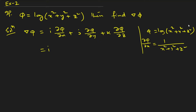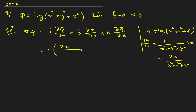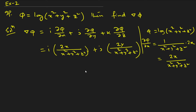By the chain rule, ∂φ/∂x = 1/(x² + y² + z²) · 2x = 2x/(x² + y² + z²). Similarly, ∂φ/∂y = 2y/(x² + y² + z²) and ∂φ/∂z = 2z/(x² + y² + z²).